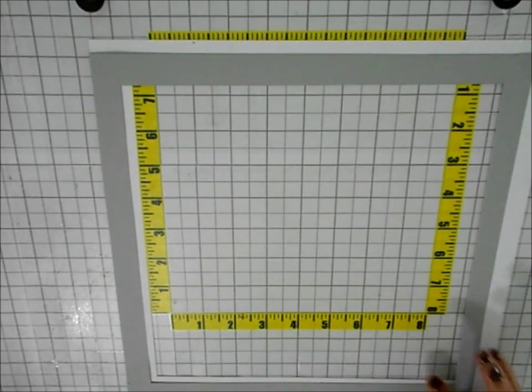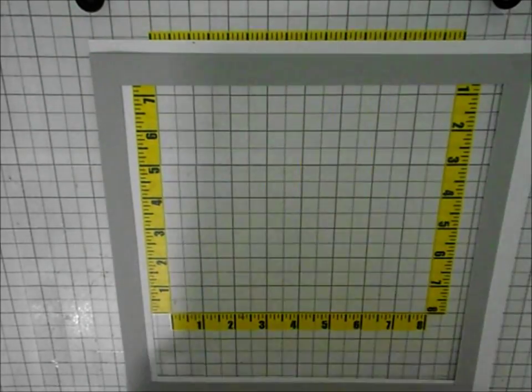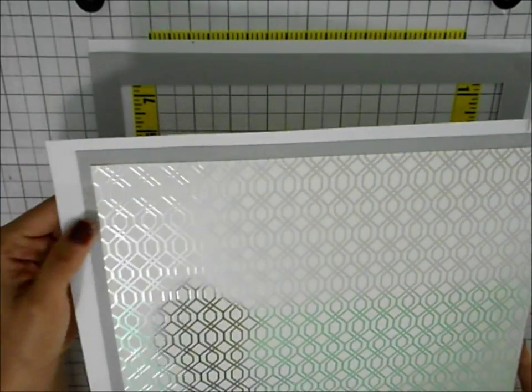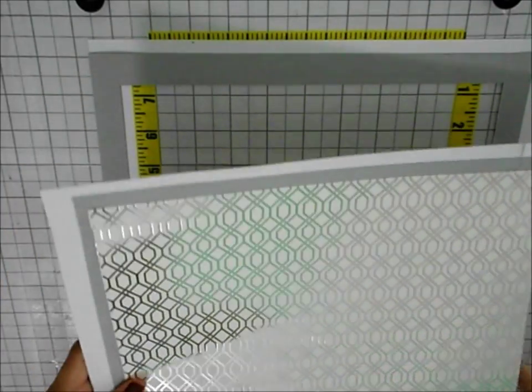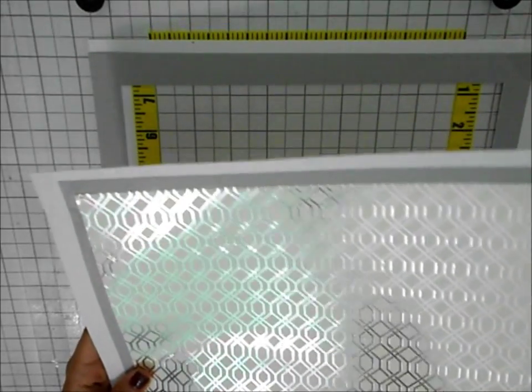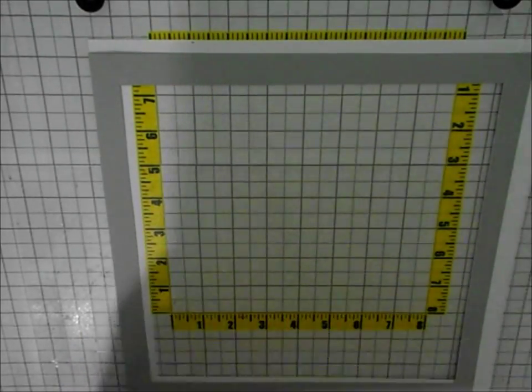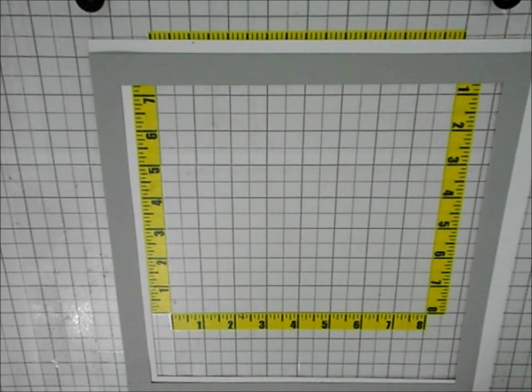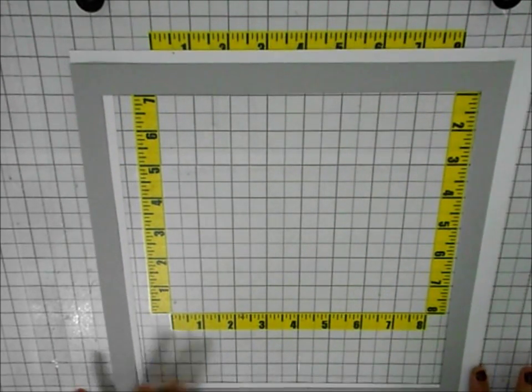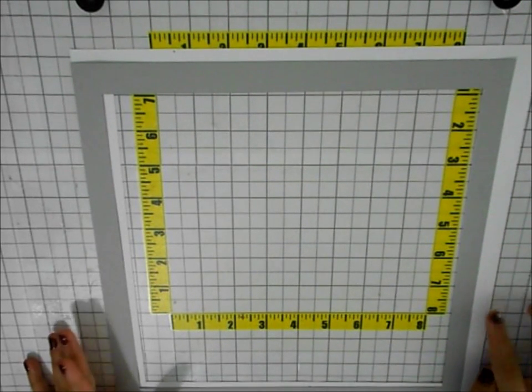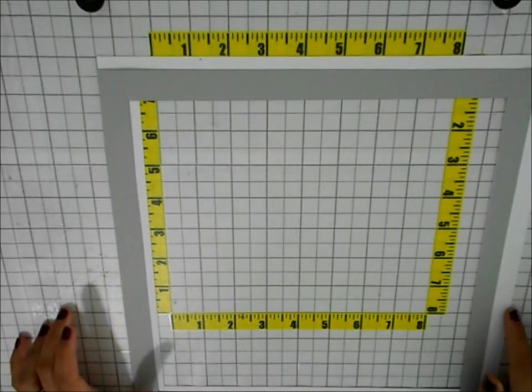The second technique actually piggybacks off of the first one which is how to use eight and a half by elevens to create your twelve by twelve layout borders and not waste an entire sheet of twelve by twelve paper. So that being said I've already created my twelve by twelve borders here with one inch strips using eight and a half by eleven paper.